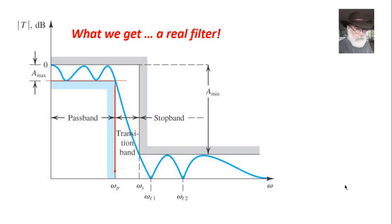In the stop band, ideally we would have infinite rejection — in decibels, 20 times the logarithm of zero is negative infinity. But in a real filter we say: give me at least a minimum number of decibels of rejection — 20, 25, 30, or 40 decibels. That minimum required attenuation in the stop band is called A_min. We draw a horizontal red line at A_min, intersect it with the blue curve to find omega_s, the edge of the stop band. In a real filter, omega_p and omega_s are not the same frequency — between them is a range we call the transition band.